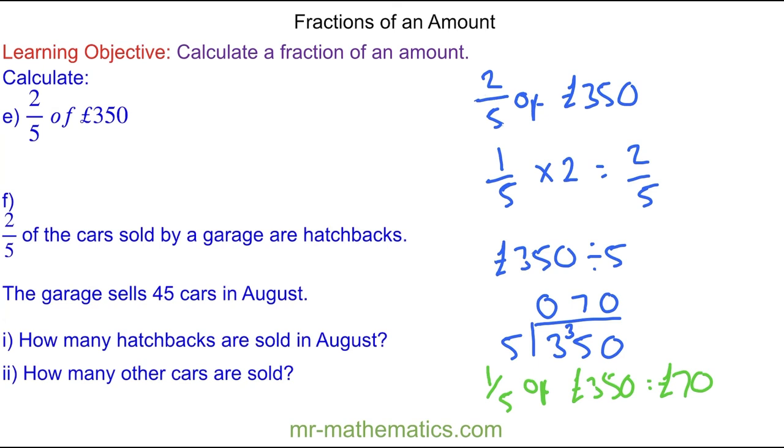And to work out two fifths, we're going to multiply this by two. So we have 70 times two, which is 140 pounds.